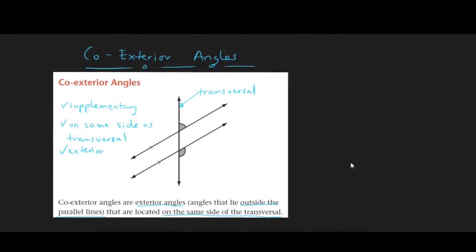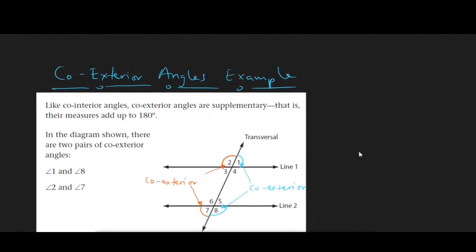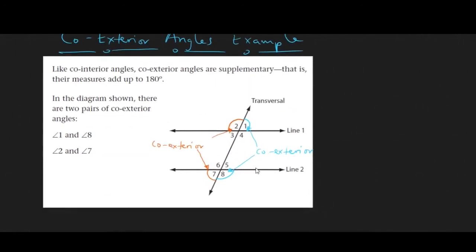With co-exterior angles, they also lie on the same side as the transversal but they are not congruent. Rather, they are supplementary or add up to 180 degrees. Referring to our earlier diagram, angles 1 and 8, and angles 2 and 7, are both co-exterior.